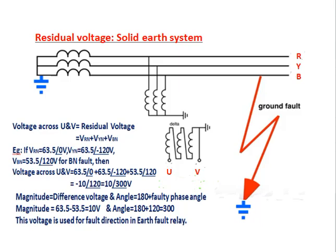Residual voltage in a solid earth system: the transformer neutral is directly connected to the star point, a PT is series-connected, and UE is an open delta voltage. If a BN fault occurs, the BN voltage is reduced. The residual voltage across U and E equals Vrn + Vyn + Vbn. For example, if Vrn = 63.5∠0°V, Vyn = 63.5∠−120°V, Vbn = 53.5∠120°V, then residual voltage = 63.5∠0° + 63.5∠−120° + 53.5∠120° = 10∠300°V.